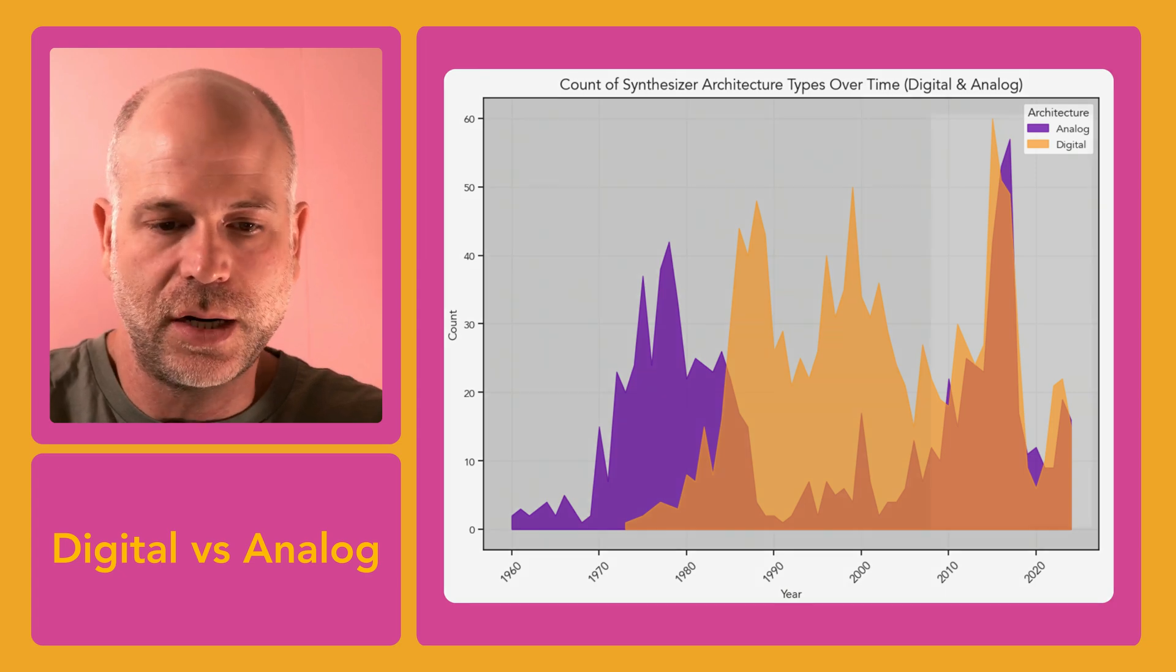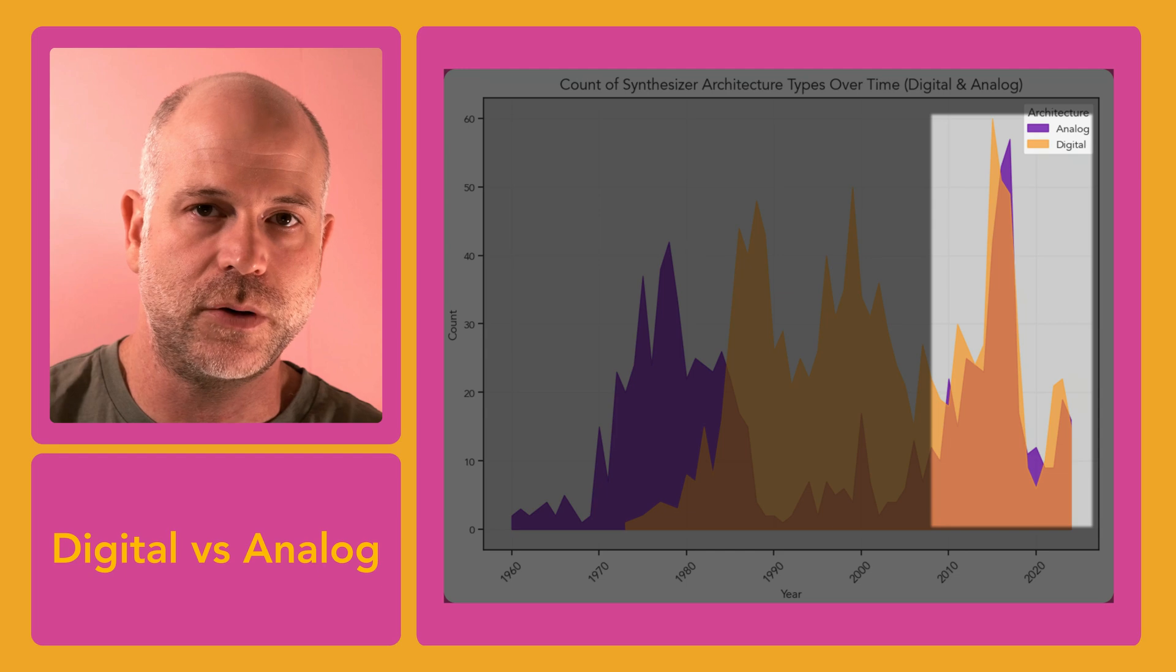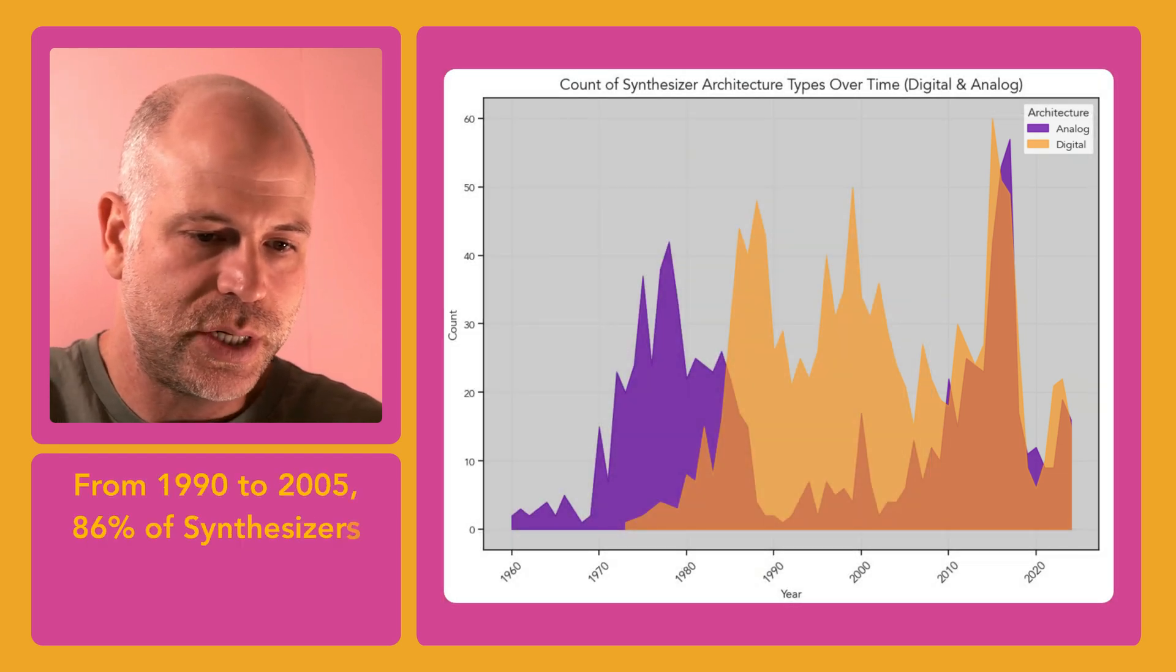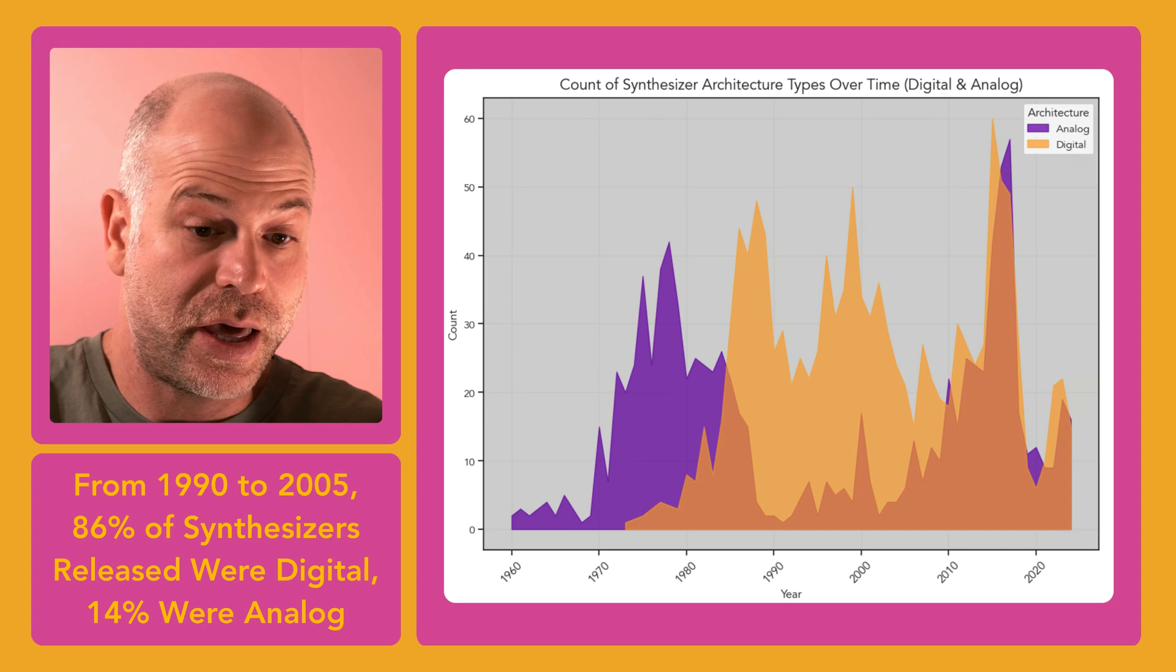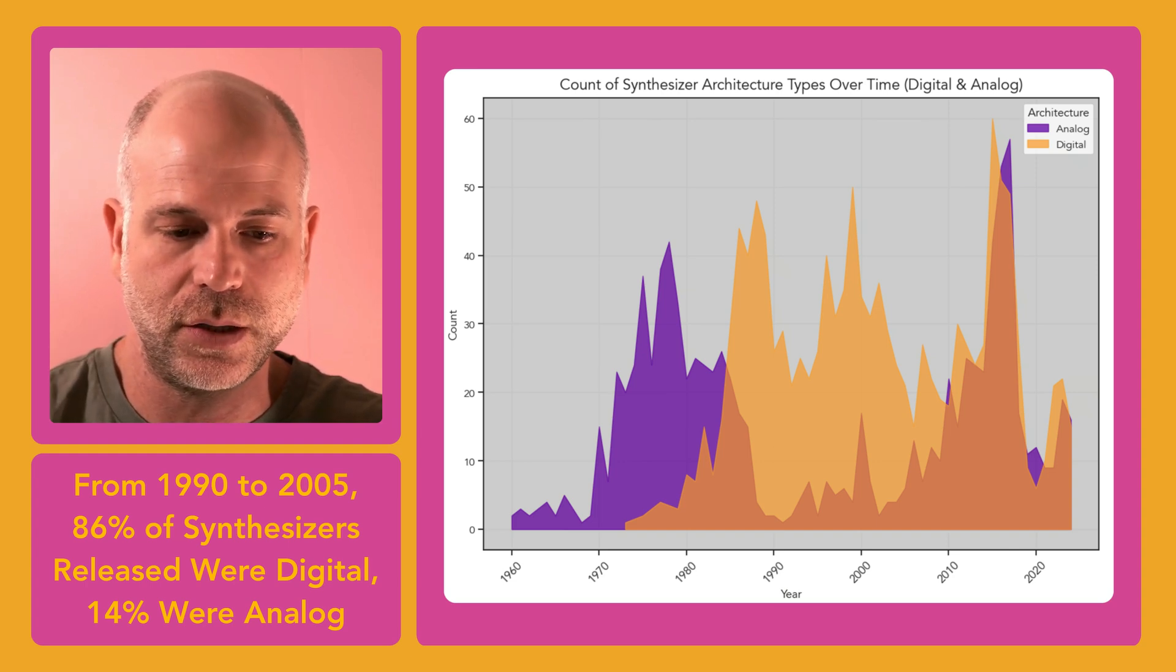However, starting in the 2010s, analog synths made a pretty big comeback and we can see a more equal distribution between the two types. To sum it up, between 1990 and 2005, 86% of the synths released were digital, while only 14% were analog.